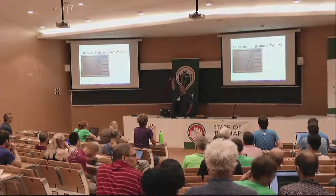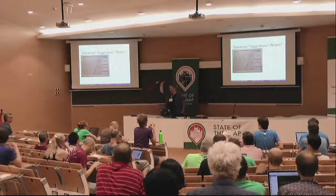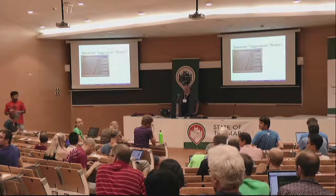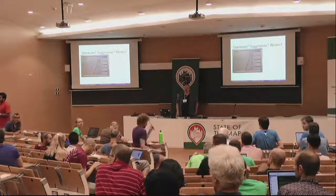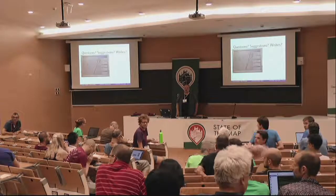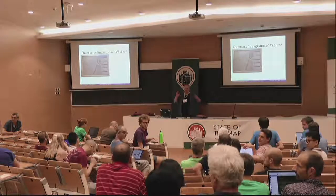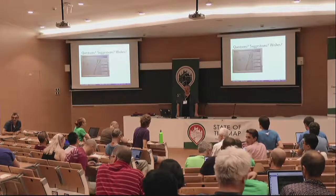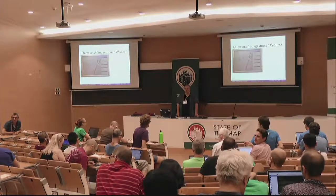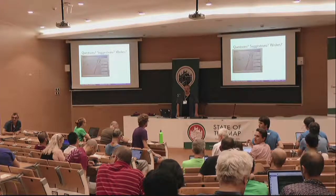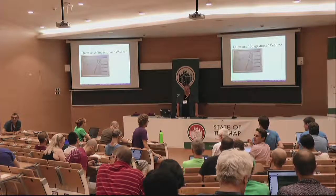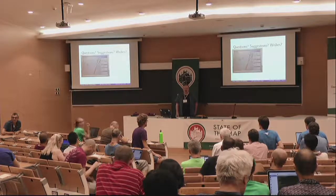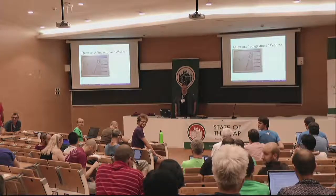By the way, I also have some example prints here — if you want to see them, try to grab me later. A question from the audience: I'm managing the OpenStreetMap Belgium tile server and we have our own Mapnik styles — would you be interested in implementing those in your tool? If you have the styles on GitHub or somewhere, that would be great — you can send that to me.